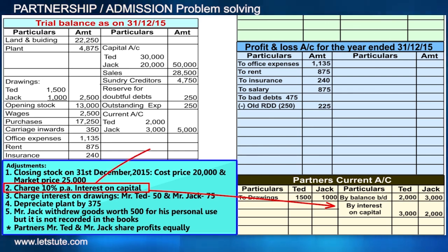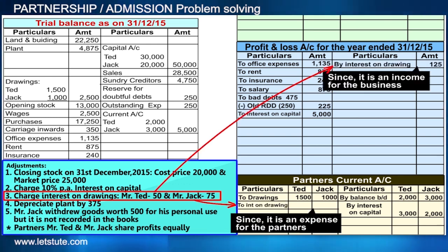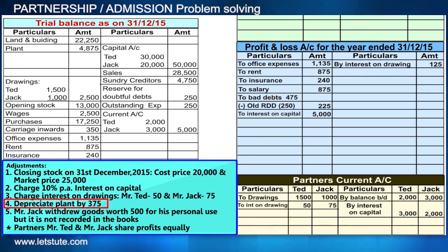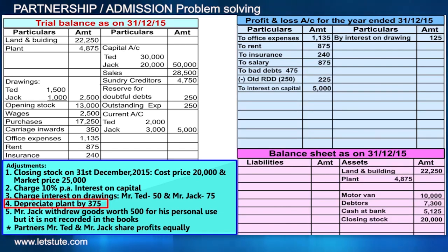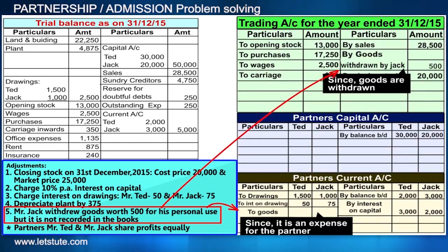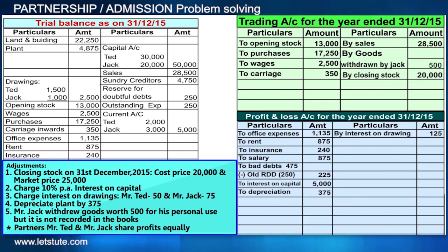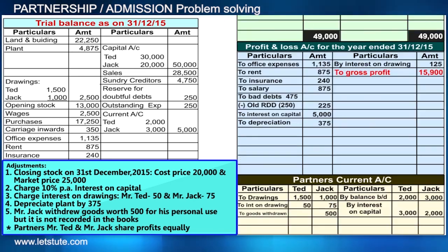Interest on capital also goes on the debit side of the profit and loss account since it is an expense for the firm. Similarly, interest on drawings is an expense for the partners and income for the business, so it comes on that side and in the partners' current account. Then we have depreciation, which will come here as well. Jack also withdraws goods worth 500 for personal use — additional drawings with two effects posted to the appropriate accounts.